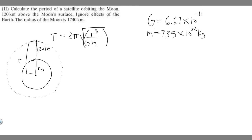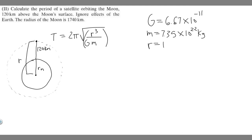We have G, we have M, we need R in order to solve for T. So what is R equal to? Keep in mind R is going to be this whole distance here. It's going to be 120 kilometers — essentially the height, which I'll denote as H — plus the radius of the moon, R sub M.